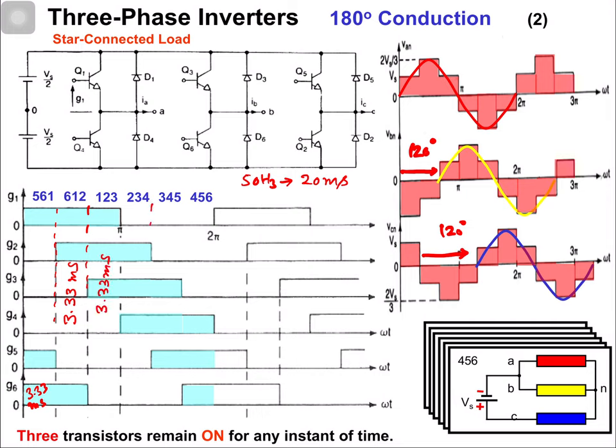In this way you can generate 50 Hz output at the inverter terminals. If you want to change the frequency, you will have to change the time of each switching state, keeping them equal. You can calculate that time and apply each switching state accordingly. To change the output voltage, you will need to use PWM.